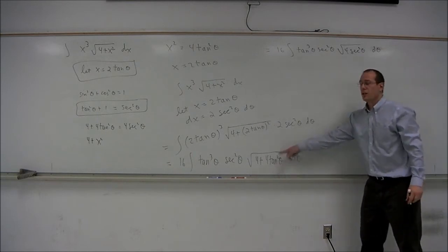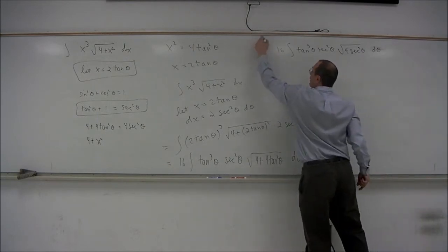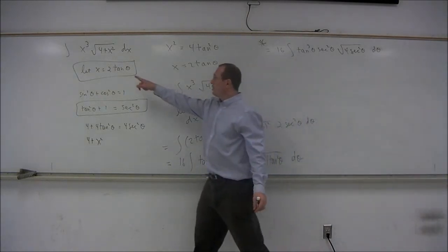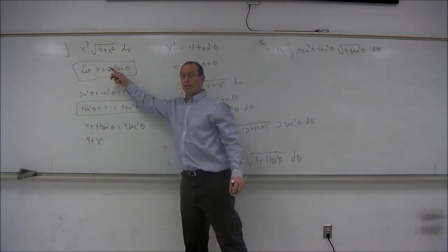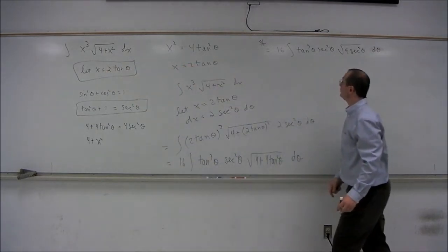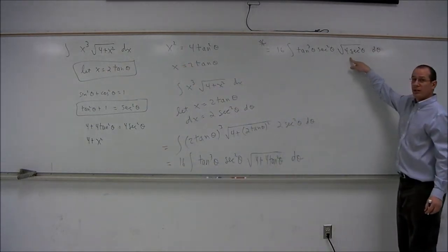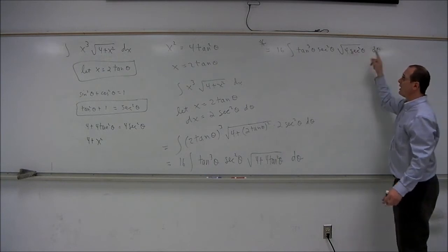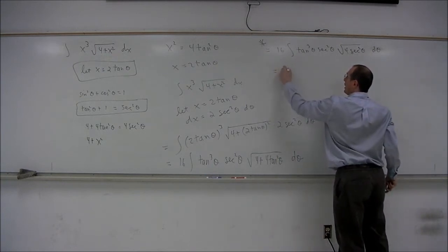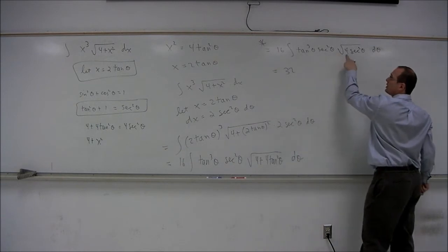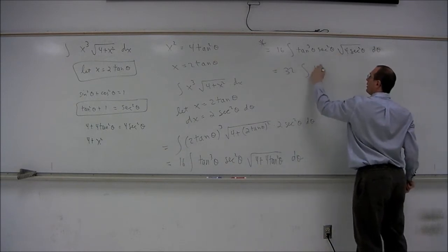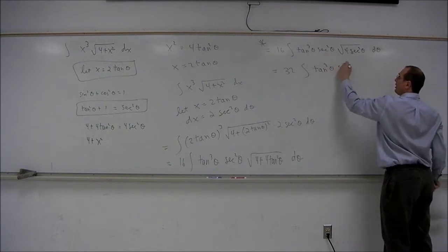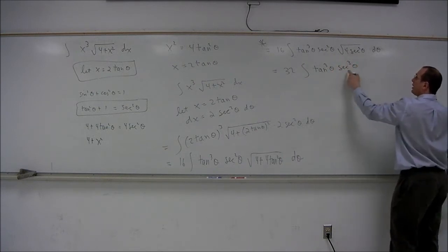Using the identity — this is a major step, and the reason we made the choice we did at the beginning — we can take the square root of 4 secant squared theta. The square root of 4 is 2, and the square root of secant squared gives us secant. So we get 32 here, and we already had secant squared, so joined by another secant we get secant cubed: 32 integral tangent cubed theta secant cubed theta d theta.